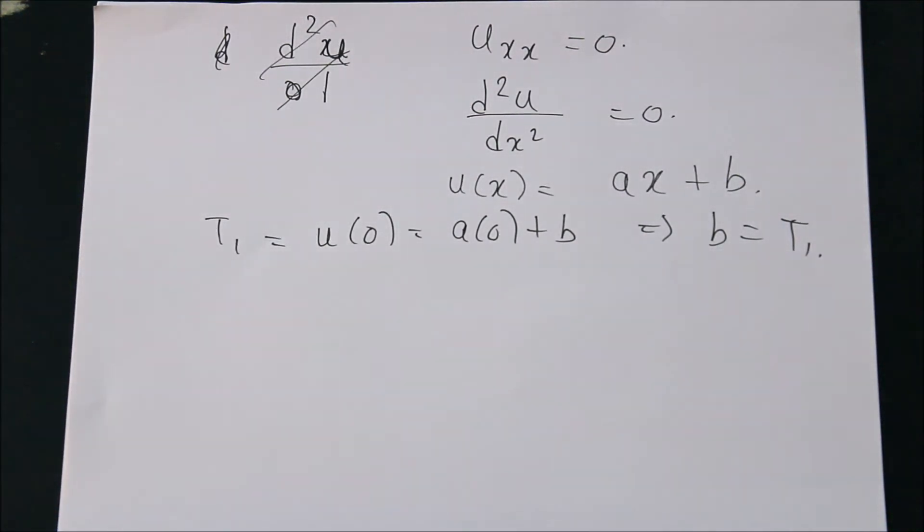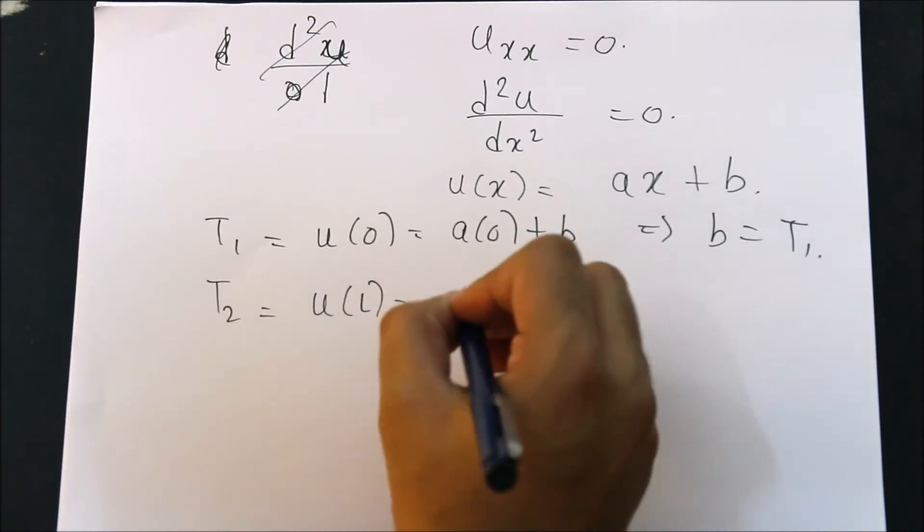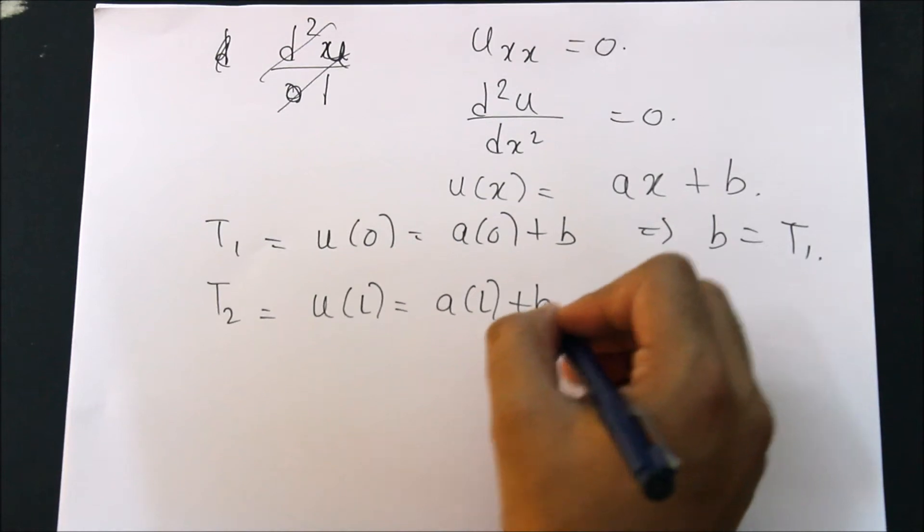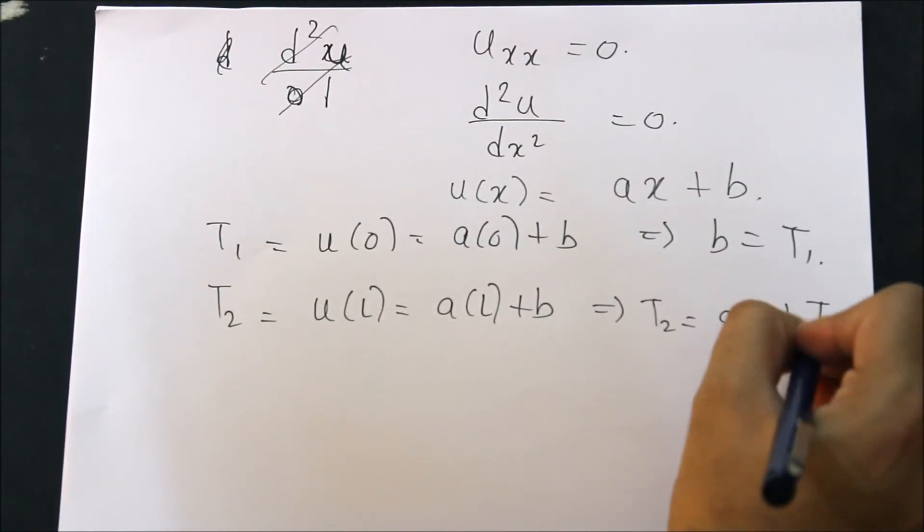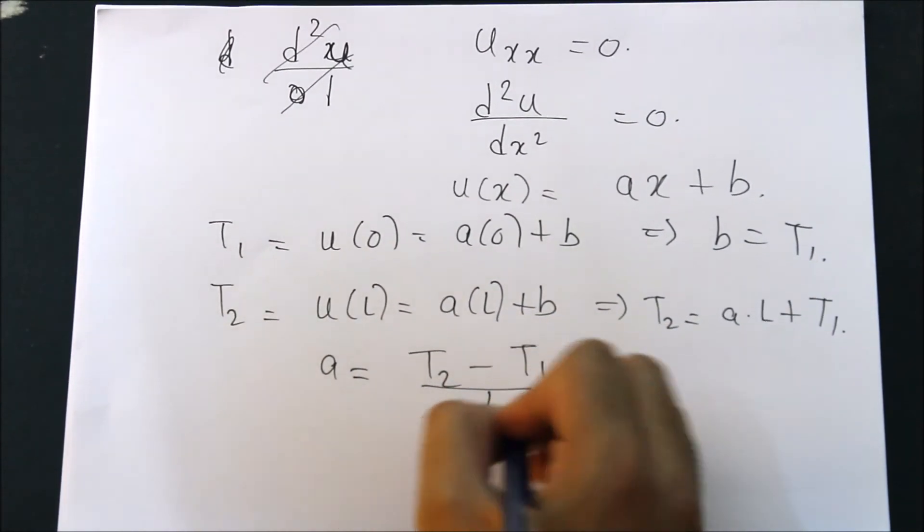What is T2? T2 is nothing but U of L, which is A into L plus B. So T2 equals A into L plus T1. What is my A? A is nothing but (T2 minus T1) upon L.